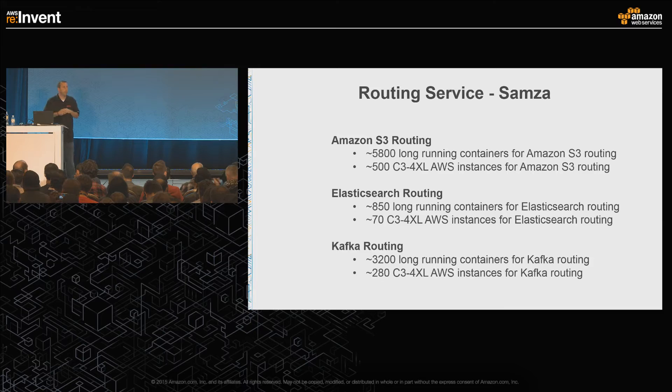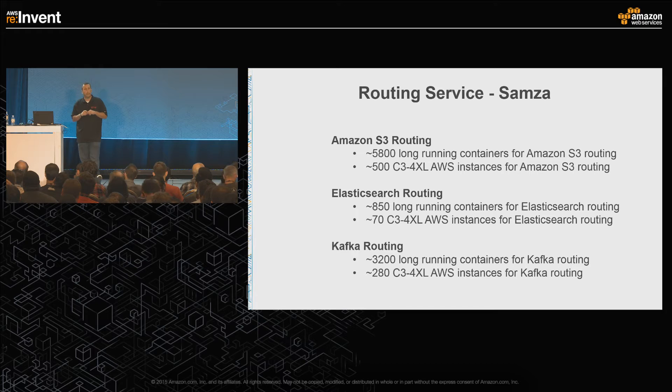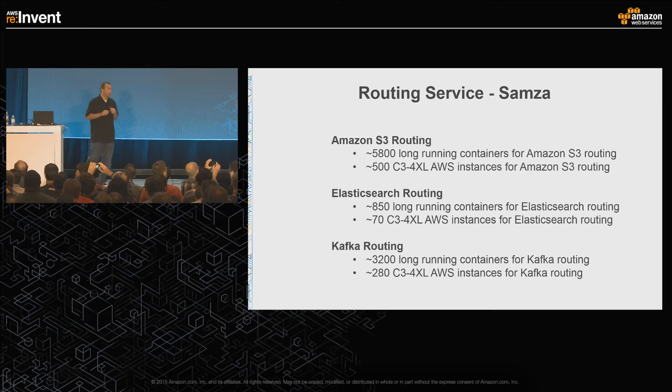Looking at the number of long-running containers we have for S3, we're running 5,800 containers on about 500 C3.4XL instances. For Elasticsearch, there are about 850 long-running containers. For Kafka routing, we're at about 3,200 long-running containers. In total, we're running about 10,000 containers for the routing service right now across about 850 instances.